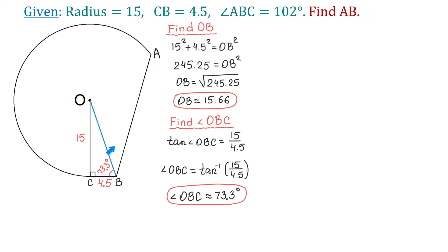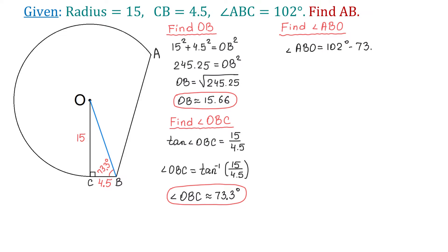Once we know angle OBC, we can find angle ABO by subtracting 73.3 degrees from 102 degrees. So, angle ABO equals 102 degrees minus 73.3 degrees, which gives angle ABO equals 28.7 degrees.